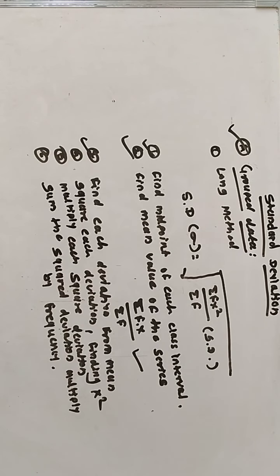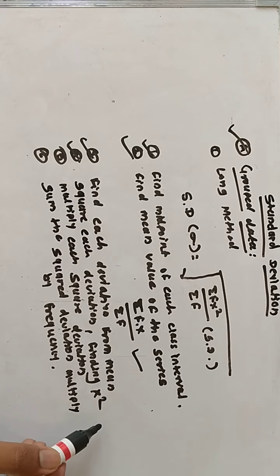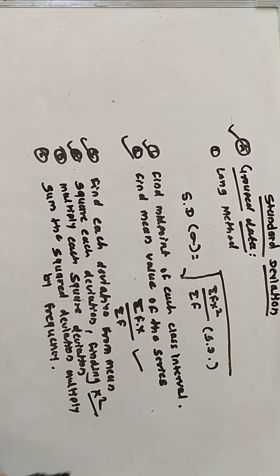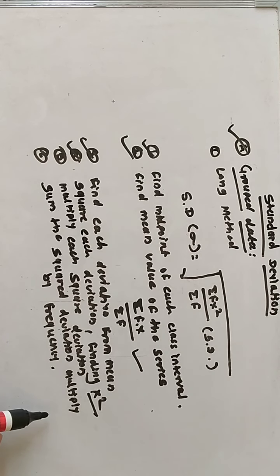Step number three: find each deviation from the mean. Step number four: square each deviation, that is calculate x². Step number five: multiply each squared deviation. Step number six: sum all the squared deviations multiplied by the frequency.